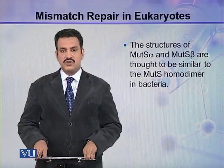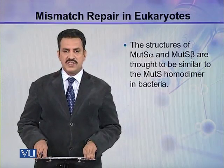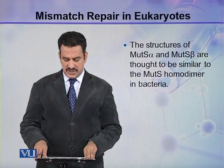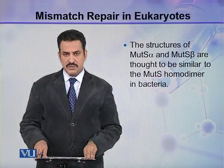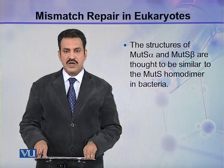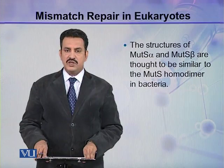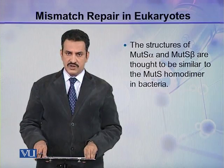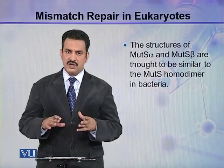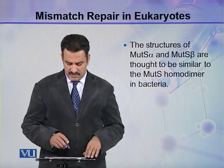The structures of MutS alpha and MutS beta are thought to be similar to the MutS homodimer in bacteria. So structurally they are quite similar.